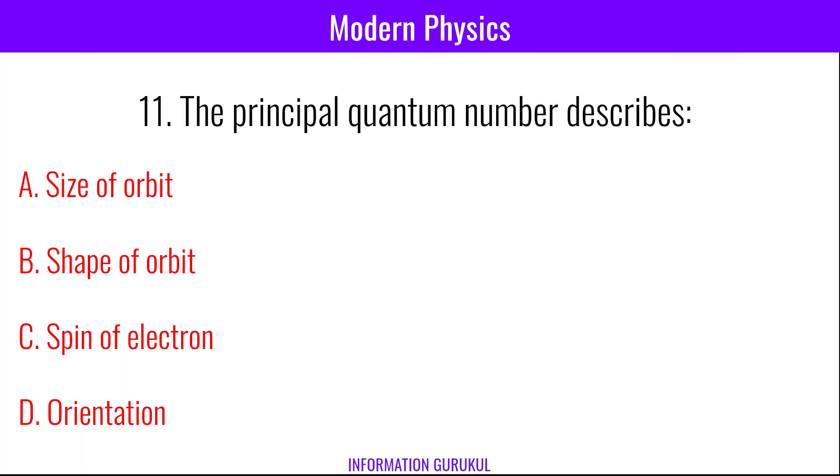The principal quantum number describes size of orbit.